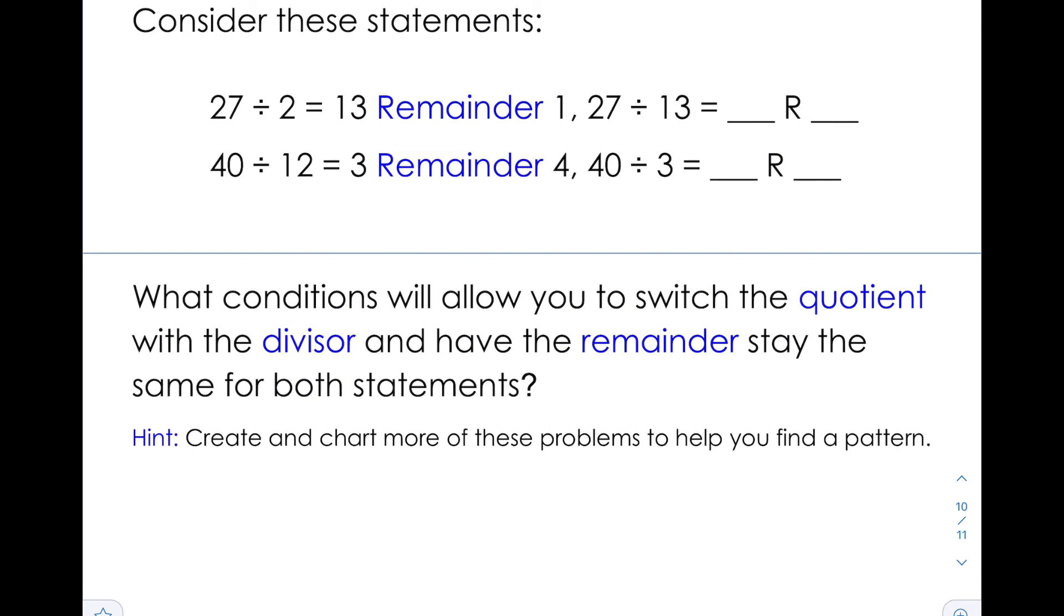Consider these statements: 27 divided by 2 is 13 with a remainder of 1. If we were to flip the quotient and the divisor around, and we said 27 divided by 13, that would be twice with also a remainder of 1. Here, 40 divided by 12 equals 3 remainder 4. We flip it around, we get 40 divided by 3 is equal to 12 with a remainder of 4. We can check our answers. If I do 13 times 2, I get 26 plus 1 equals 27. So that matches up. And down here, I would do 3 times 12 which is equal to 36 plus 4 is equal to 40.